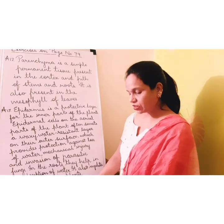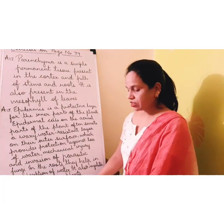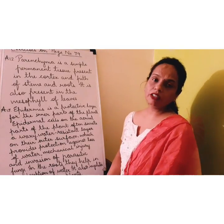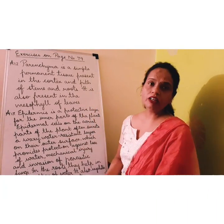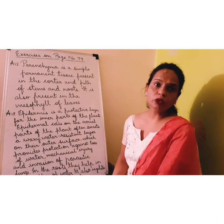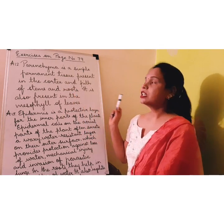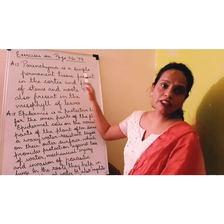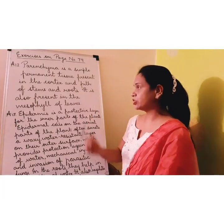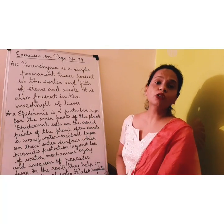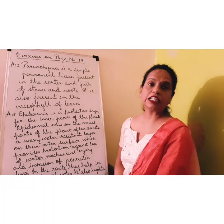We come to the 12th question: Name the regions in which parenchyma tissue is present. Now parenchyma, as you already know, is a simple permanent tissue. It is present in the cortex and pith of stems and roots. It is also present in the mesophyll of leaves.